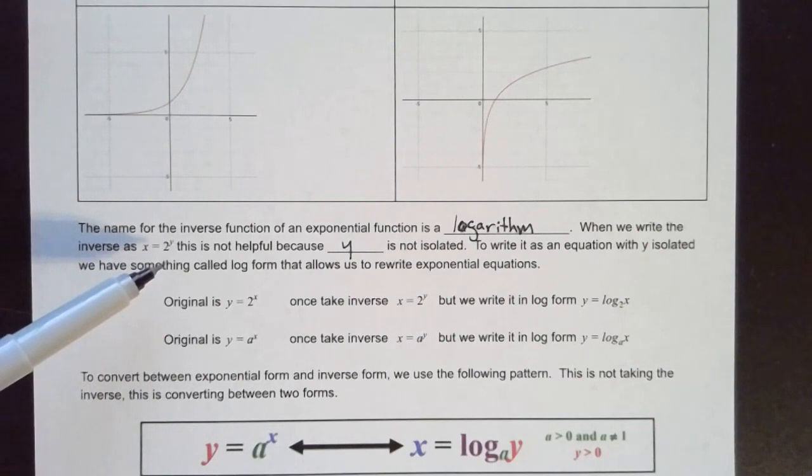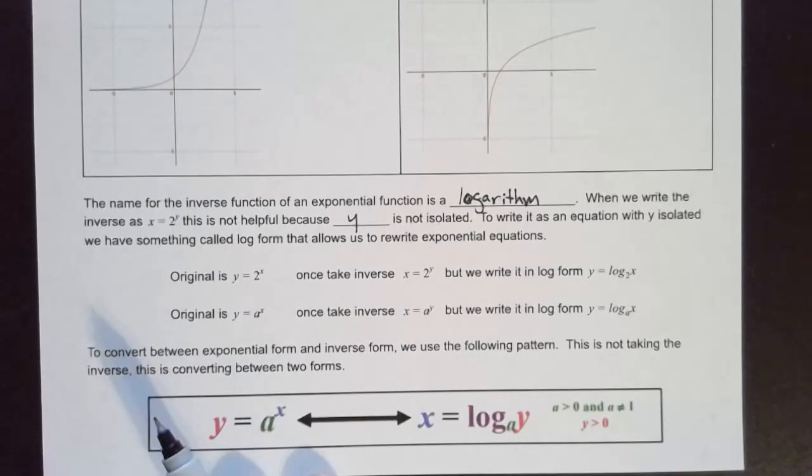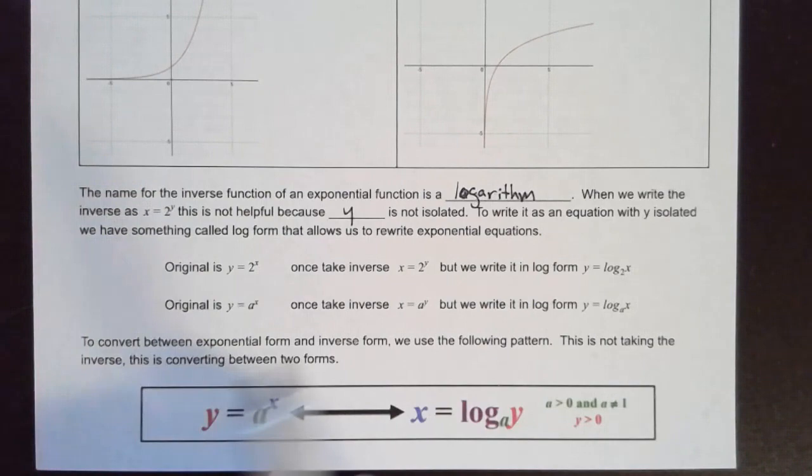We don't know any algebraic step we can do here. It's not like we can take Y roots of both sides — that wouldn't get Y by itself. We can't divide; there's nothing we can do to get this Y by itself. So they created this new form — the log form — to rewrite this so that Y is by itself on one side of the equation.